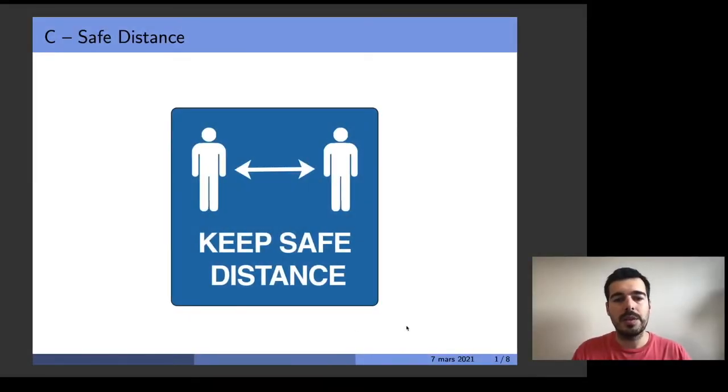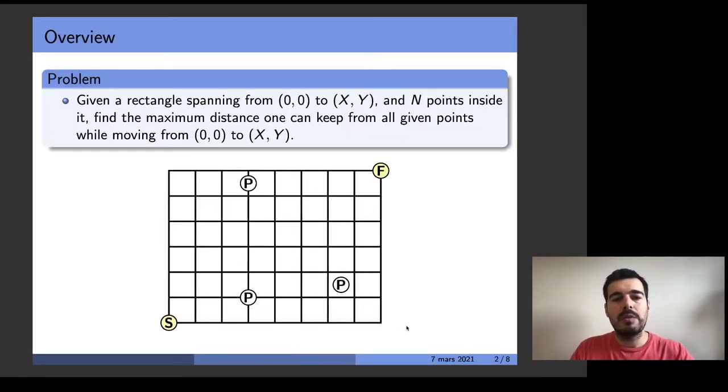Let's talk about problem C, safe distance. In this problem we have a room with n people and we want to go from the start to finish positions while staying as far away as possible from the people. We can represent the room as a rectangle in a 2D plane and each person has a point.